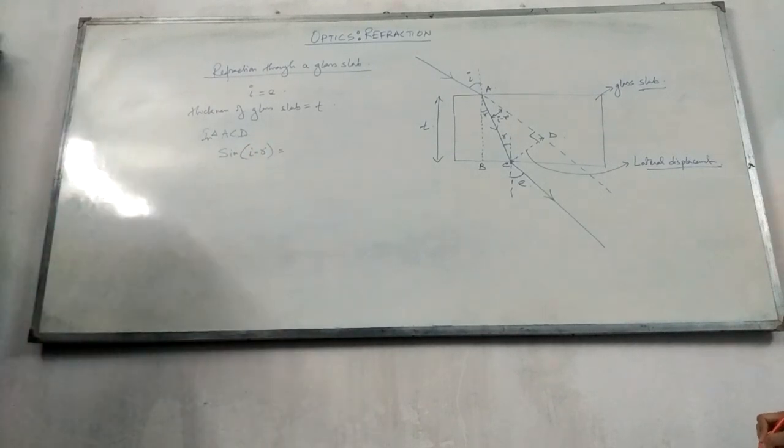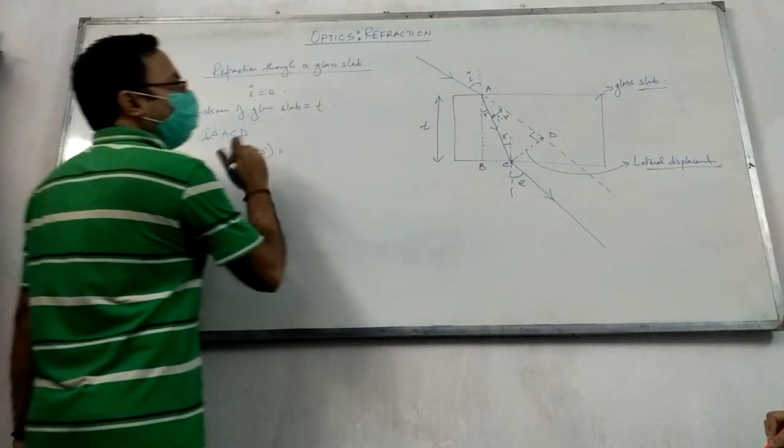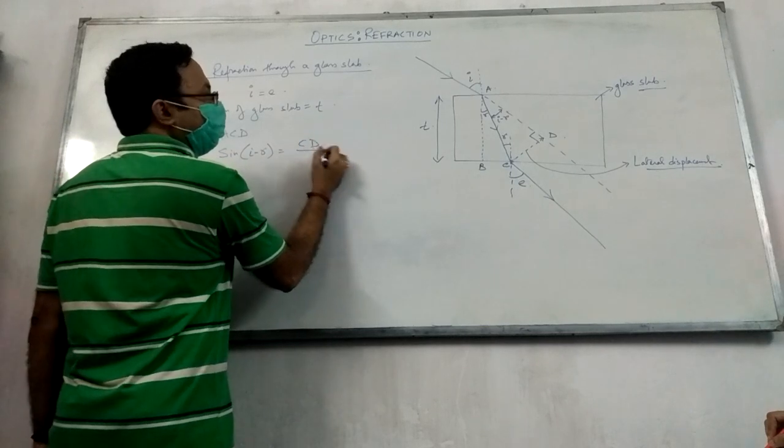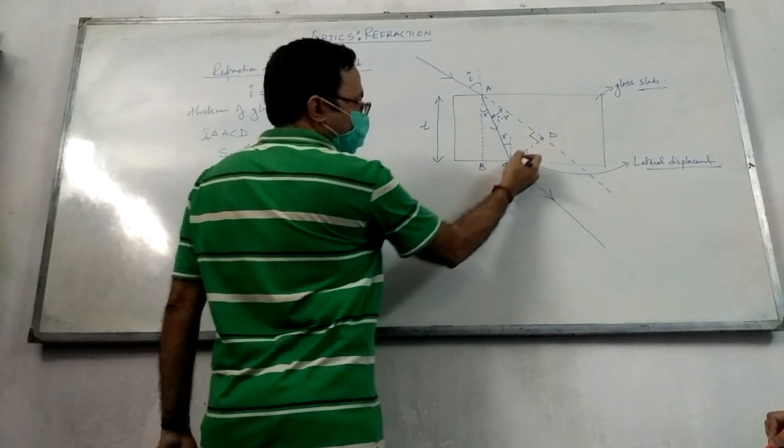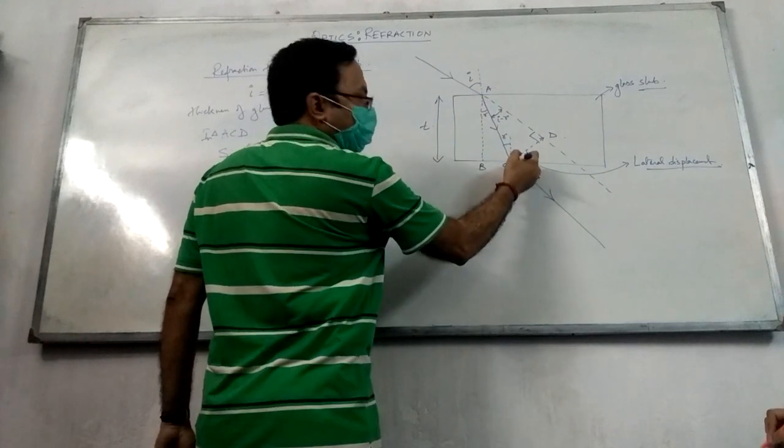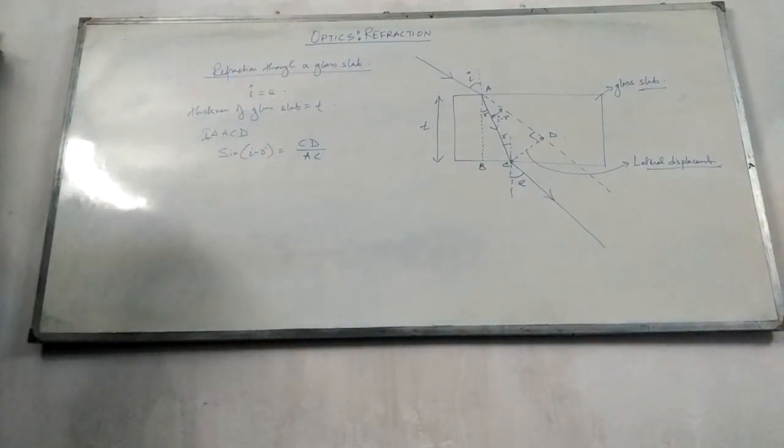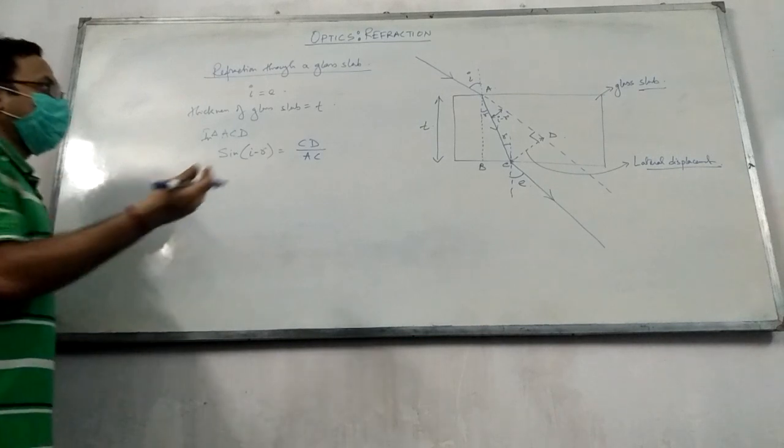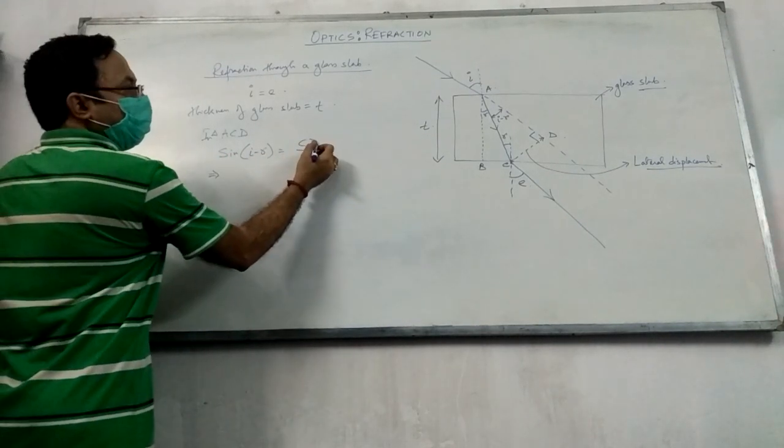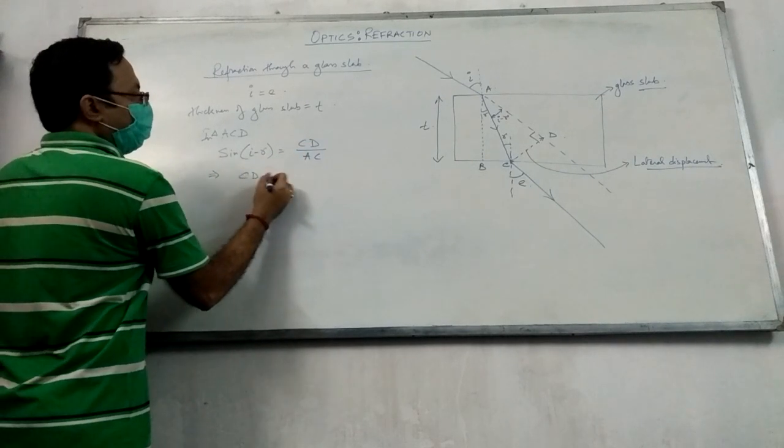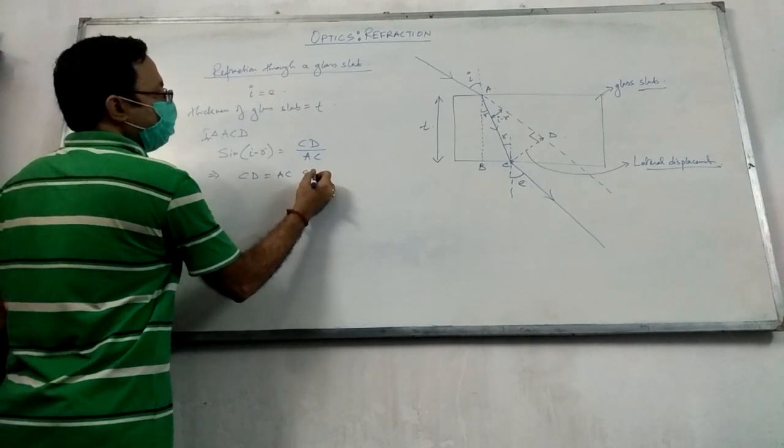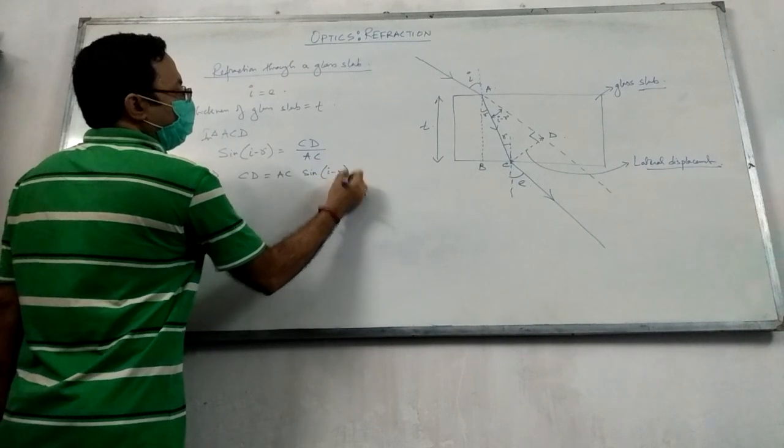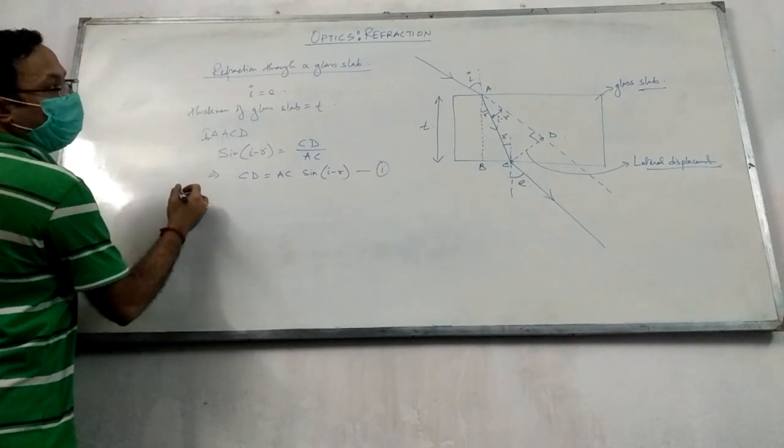What is the opposite side? Sin of i minus r? CD by AC. CD by AC, because it is perpendicular by hypotenuse. Perpendicular by hypotenuse. I can write CD as AC sin of i minus r. Let's mark this as equation 1.